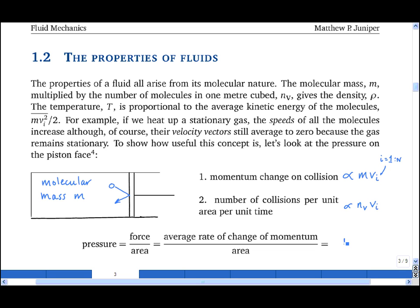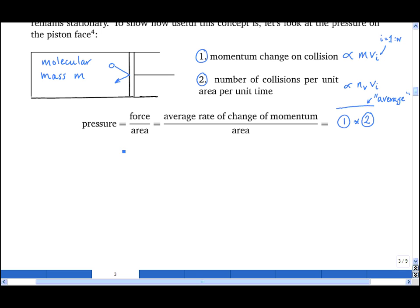And that is equal to the two above quantities multiplied together. I'll label them 1 and 2, you multiply them together, and then take a time average, where 1 is the momentum change on collision, and 2 is the number of collisions per unit area per unit volume. So let's run through the working.